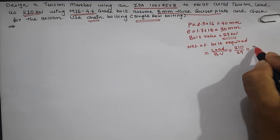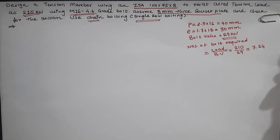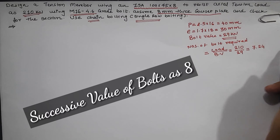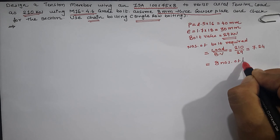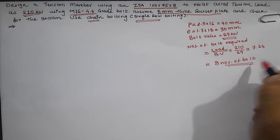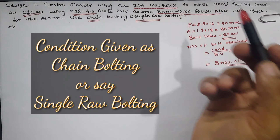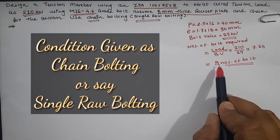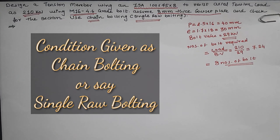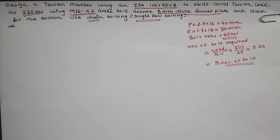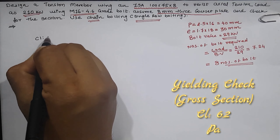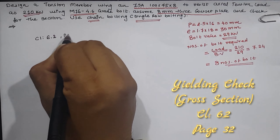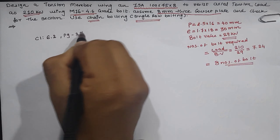210 divided by 29 equals 7.24. Since we have to go for the next successive whole number, we will provide 8 numbers of bolts. According to the given data, we have to provide single row bolting, so we provide 8 bolts in a single row. Before proceeding, let us check for the yielding criteria.